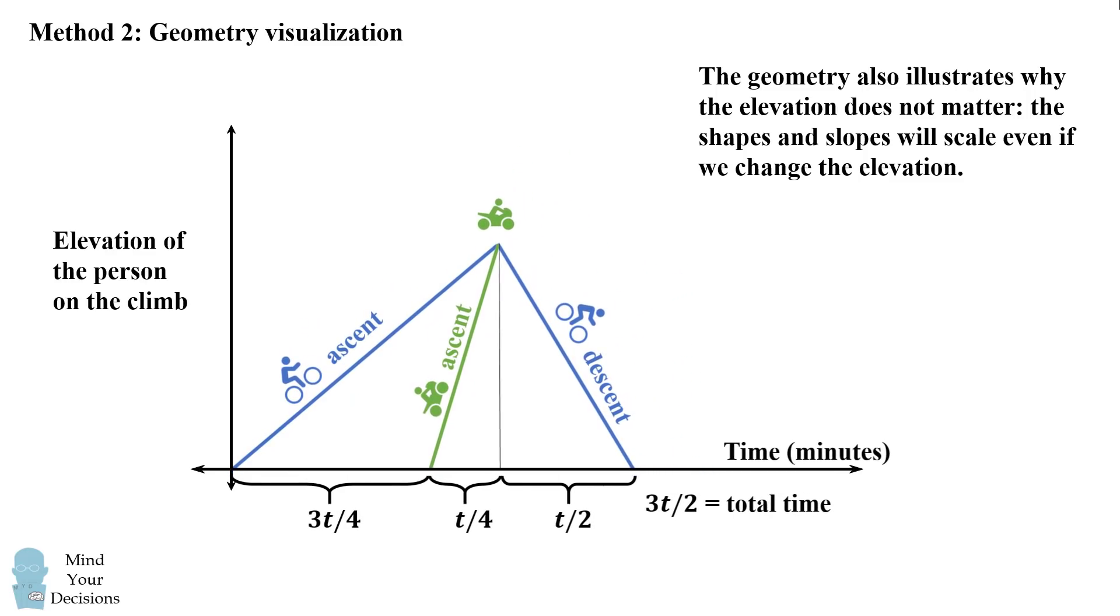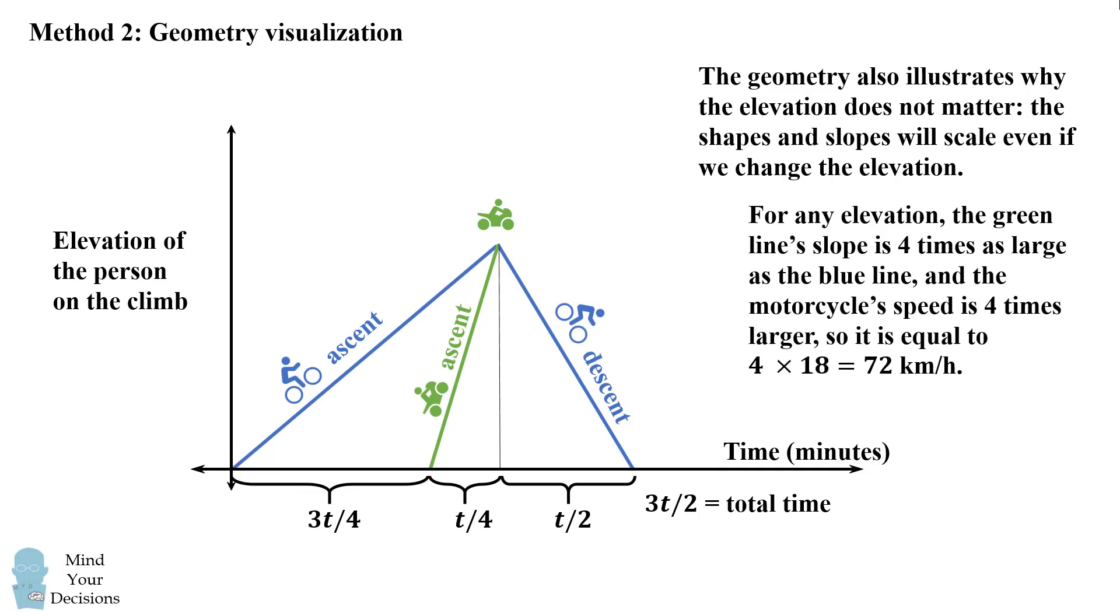Well the entire graph is going to scale, and we're still going to get the same relative speed of the motorcycle to the cycle. So for any elevation, the green line slope is 4 times as large as the blue line, and the motorcycle speed will be 4 times larger to be 72 kilometers per hour.